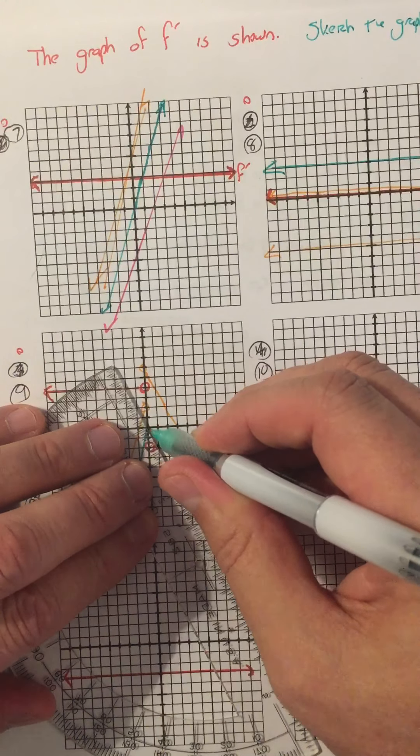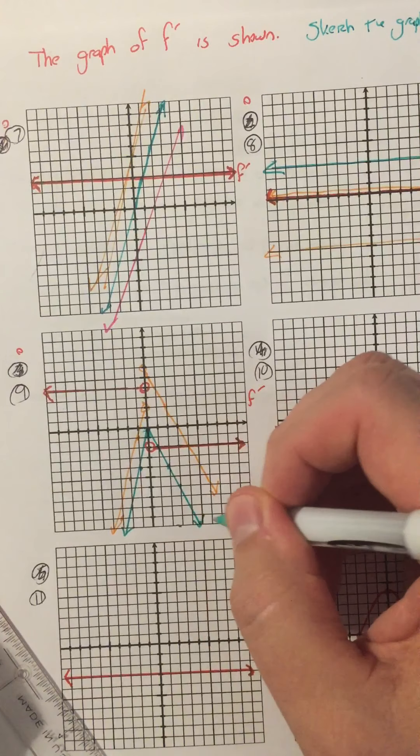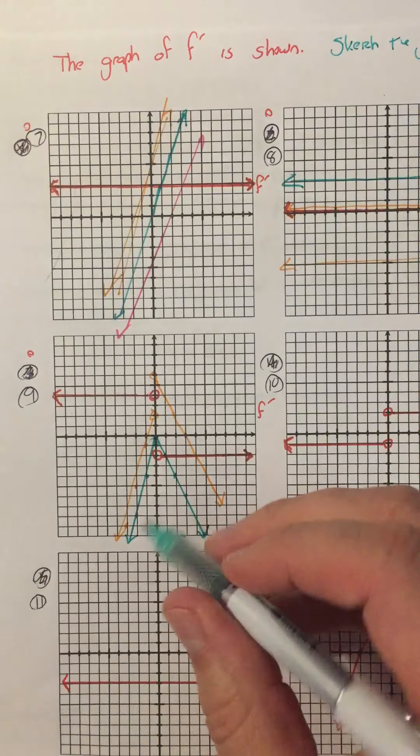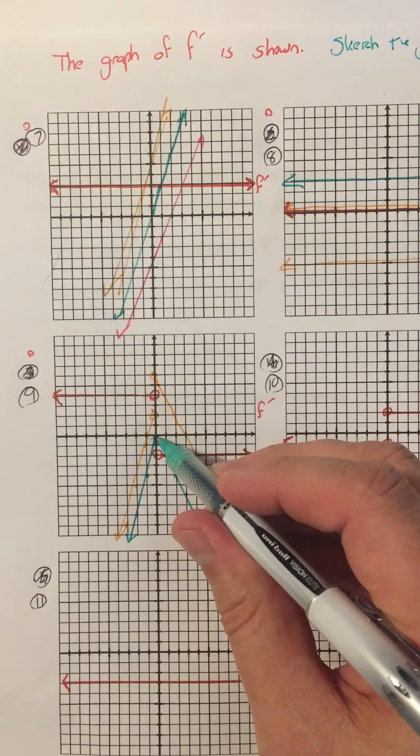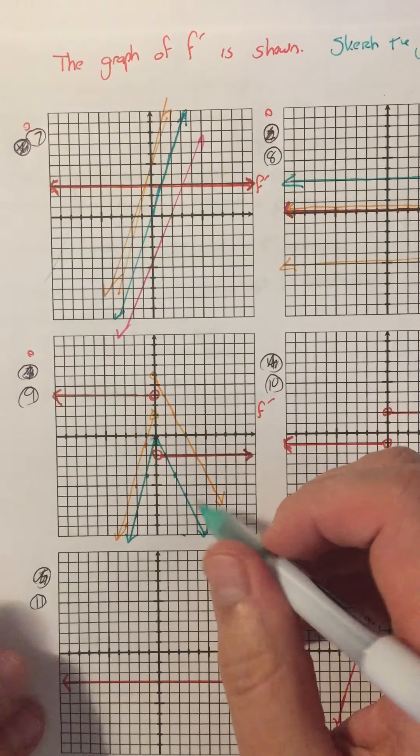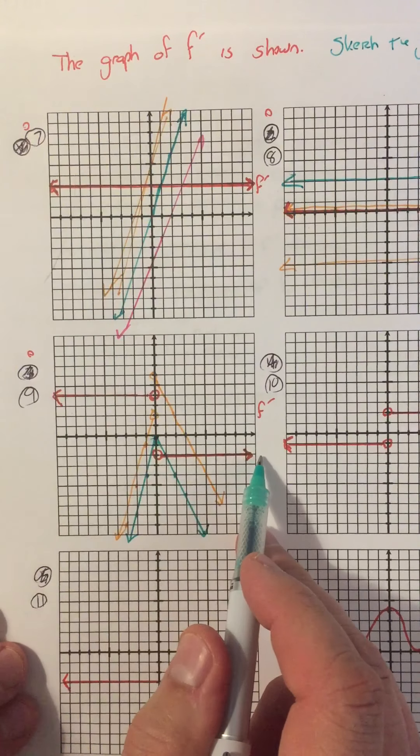So this function could, in fact, be continuous. The function f could be continuous, and yet f' might not be continuous.